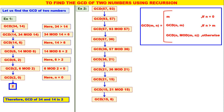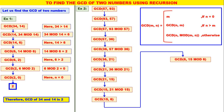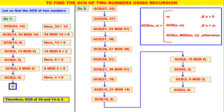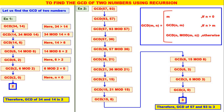In GCD of 15, 6, the second parameter is not equal to 0, and 15 is greater than 6. Therefore, this calls GCD of 6, 15 mod 6. What is 15 mod 6? 3. In GCD of 6, 3, the second parameter is not equal to 0, and 6 is greater than 3. Therefore, this calls GCD of 3, 6 mod 3. What is 6 mod 3? 0. In GCD of 3, 0, the second parameter is equal to 0, so M = 3 is the GCD. Therefore, GCD of 57 and 93 is 3.